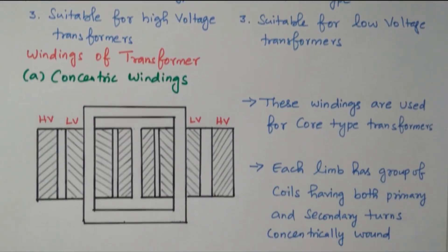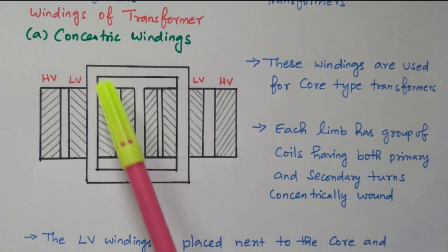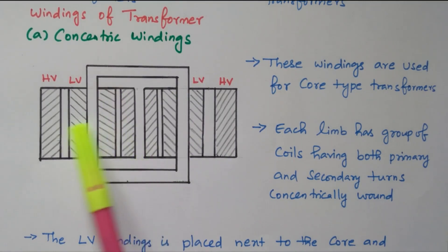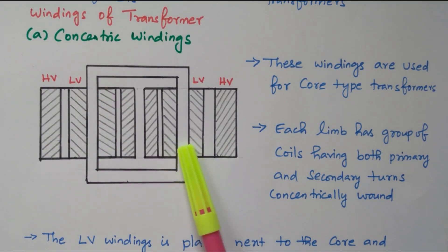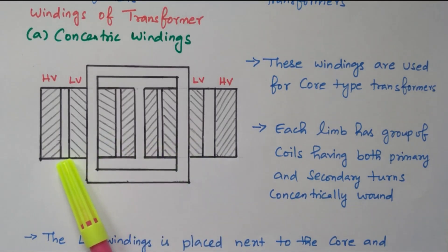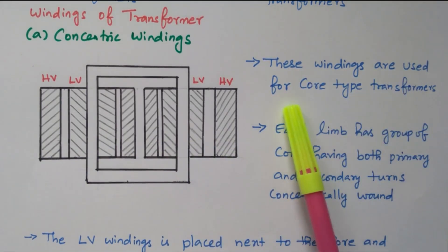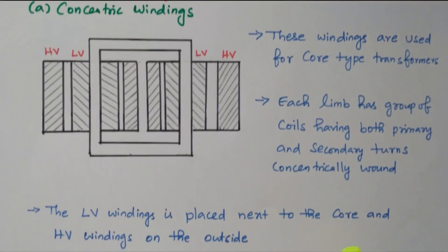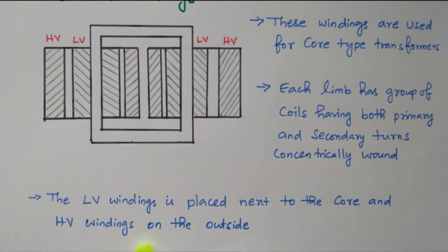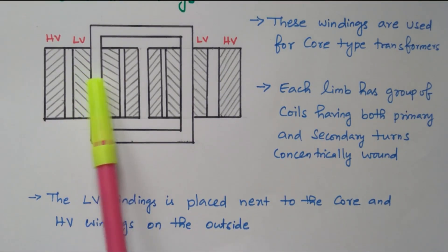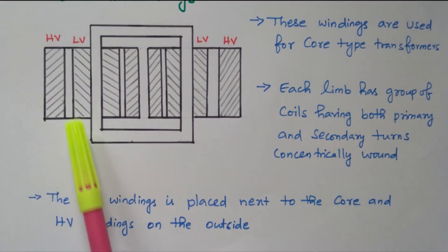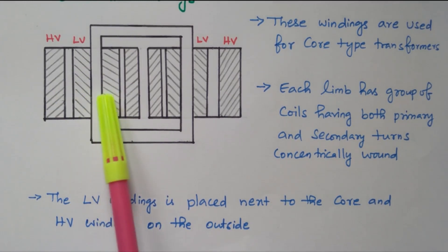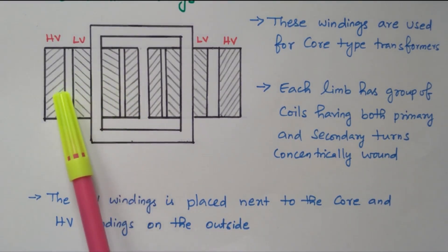Now we will see the winding types: concentric winding and sandwich type. In concentric winding, the low voltage winding is placed on the core and the high voltage winding is placed on the outside over it — on both sides. This is used for the core type transformer. Each limb has a group of coils having both primary and secondary turns concentrically wound. The LV winding is placed next to the core and the HV winding is on the outside.